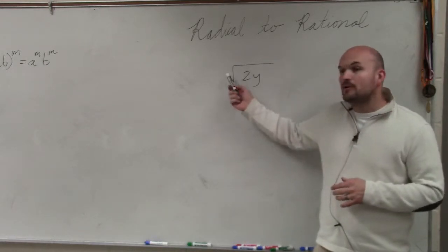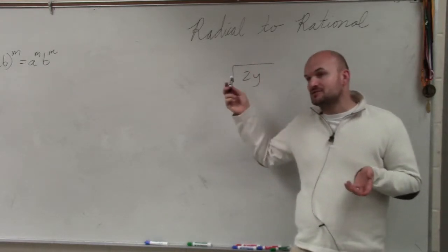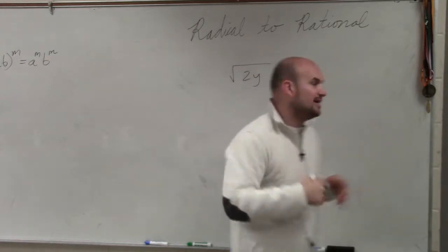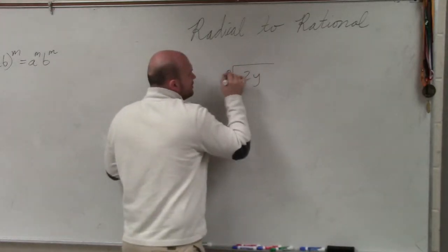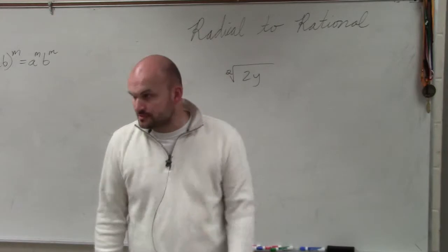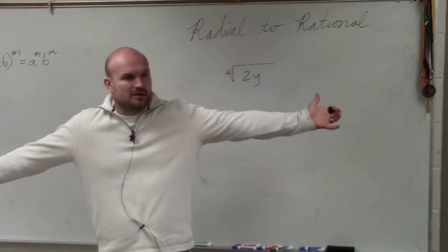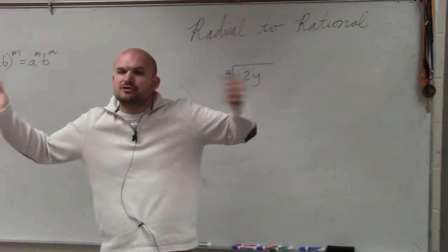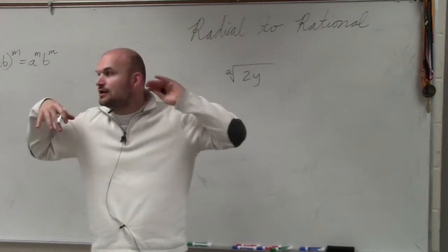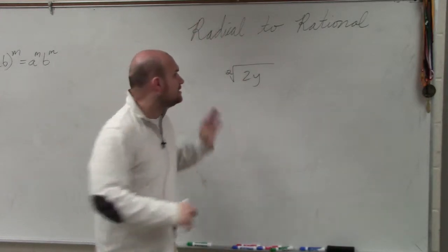First of all, when we have a root or radical symbol without a number, we assume that is the square root. You guys should be very familiar with the square root. Just know that that number is 2. We just don't always write it unless it's a root higher than 2.